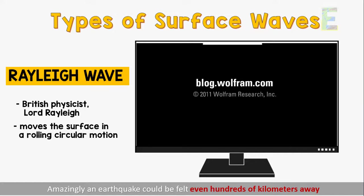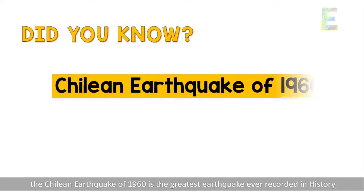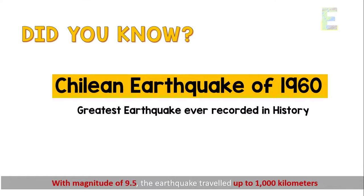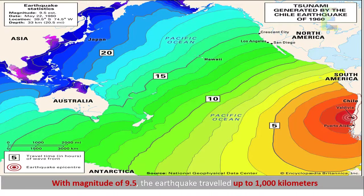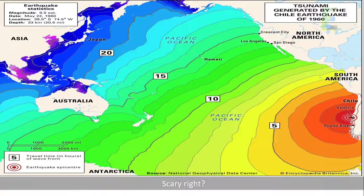Amazingly, an earthquake could be felt even hundreds of kilometers away from the epicenter, or the origin of the earthquake. For a quick trivia: according to National Geographic, the Chilean earthquake of 1960 is the greatest earthquake ever recorded in history, with a magnitude of 9.5. The earthquake traveled up to 1,000 kilometers, affecting countries as far as Japan and the Philippines. Scary, right?